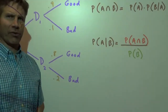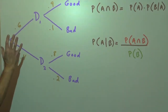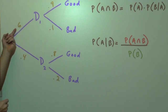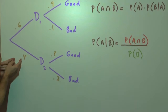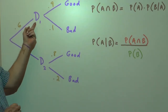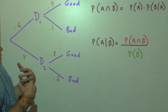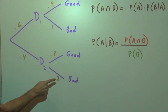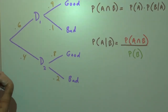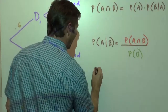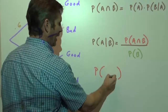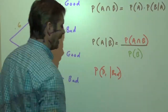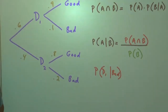Now we're getting into what's called a disease problem — this particular one isn't exactly about disease, but it's the same idea. Suppose you are a grocery store, and you get 60% of your milk from Dairy 1 and 40% from Dairy 2. From Dairy 1, 90% of the milk will still be good a week later, but 10% will be bad. At Dairy 2, it's 80% good and 20% bad. We want to find the probability that, given a carton went bad in a week, it came from Dairy 1.